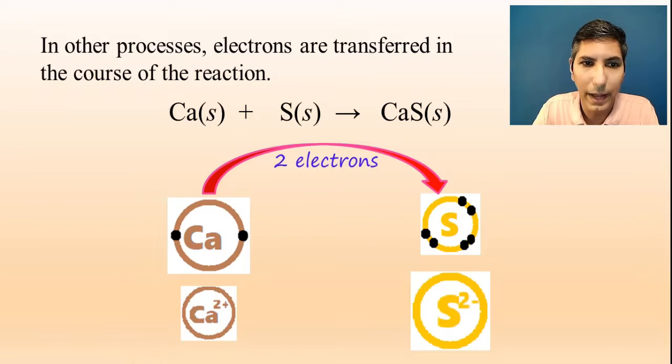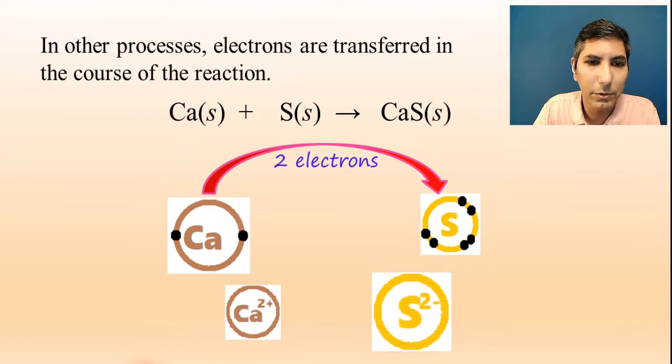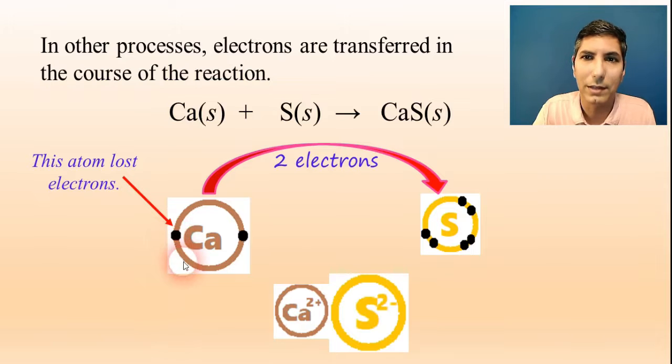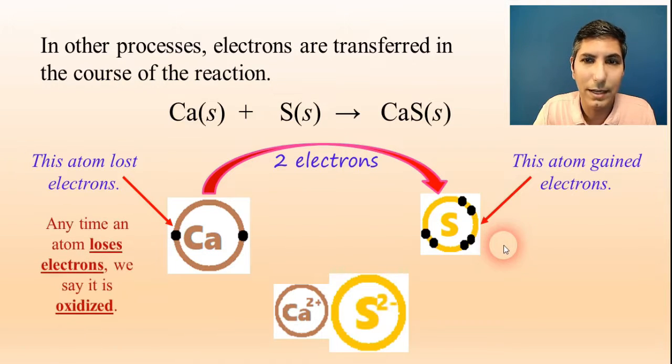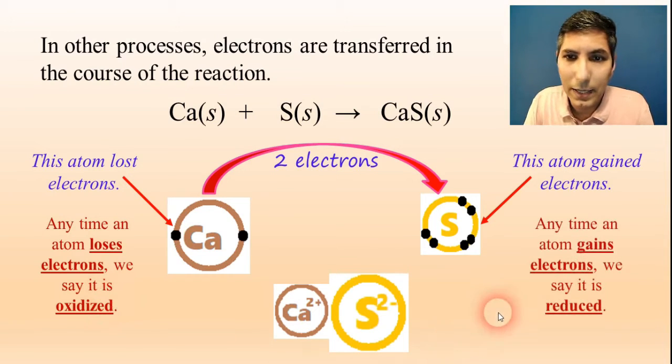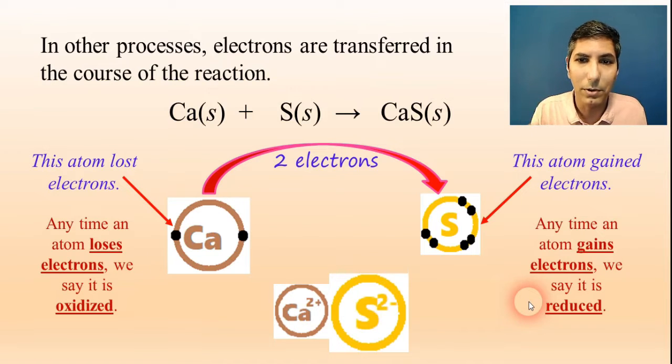After that happens, you now have calcium with a 2+ charge and sulfide with a -2 charge, and then they're able to get together by electrostatic attraction. Notice that was only able to occur because there was a transfer of electrons. That did not happen in that previous reaction. In this reaction, calcium lost electrons and sulfur gained electrons. Anytime an atom loses electrons, we say it is oxidized. Oxidation simply means the losing of electrons by an atom, ion, or species in a reaction. Likewise, anytime an atom gains electrons, like we have here with sulfur, we say it is reduced.